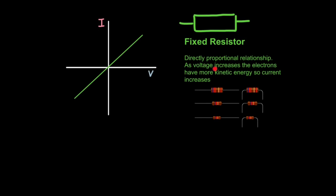So you describe this graph by saying it's a directly proportional relationship between voltage and current. And you could explain it by saying as voltage increases, the electrons have more kinetic energy, so current increases. In other words, the electrons have more of a push, so they move faster.